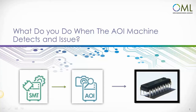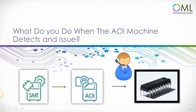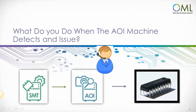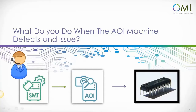But what if there are issues? Today, an operator will need to go and review the AOI defects detected, then manually stop the SMT machine from producing additional boards until the error is analyzed and corrected. He then needs to manually modify the SMT program and resume production.